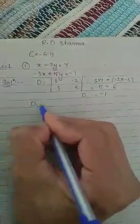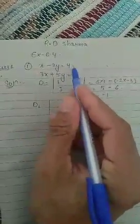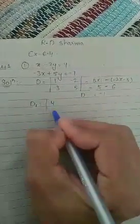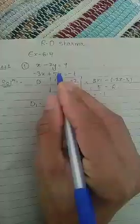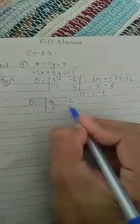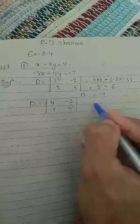Then we will find out D1, which is in place of x coefficient, we will put the constants like 4 and minus 7, and the coefficient of y will remain in that position.